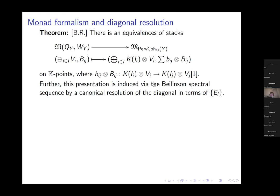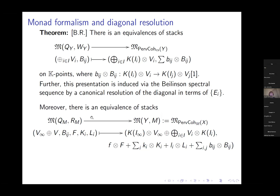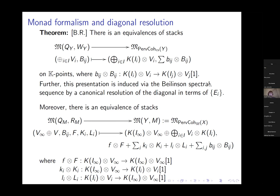We prove this, though I think all of it was folklore or would have been easily checked by experts. We also extend this to include the additional framing object — there are now maps from the framing to the main vertices and self-loops at the framing node, which have an analogous interpretation in the monad formalism.